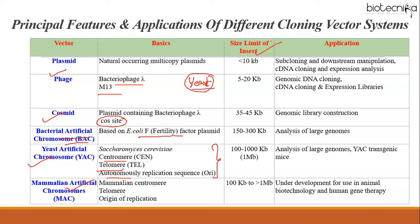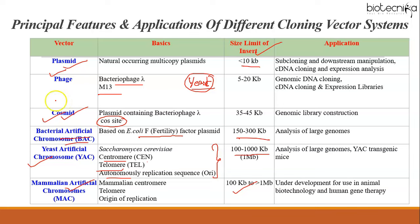Every vector has a size limit for inserts. Plasmids can clone genes less than 10 KB; cosmids are needed for 35–45 KB inserts. BAC insert size ranges from 150–300 KB, while YAC can accommodate 100–1000 KB — much more than BAC. Mammalian artificial chromosomes accommodate even larger inserts. Other artificial chromosomes include TAC and PAC.